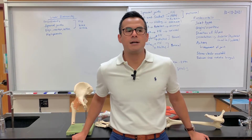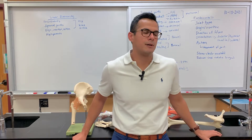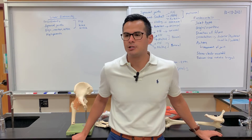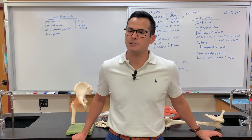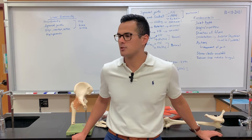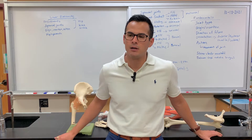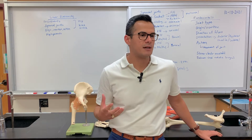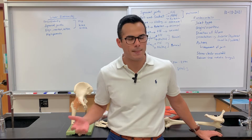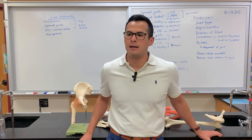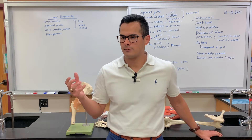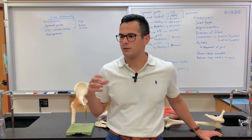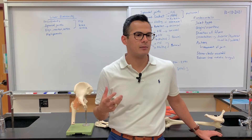In this lecture we're going to go over some of the origin, insertion, and action of some of the muscles in the lower extremity. We're also going to cover some of the ligaments that are found in the hip. But before we go into the attachments of all the different muscles, the first thing we need to review is the different movements that occur at these types of joints.